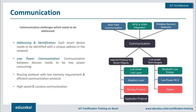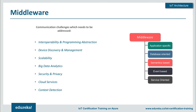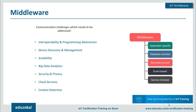Zigbee has three device types: FFD — full functional device, RFD — reduced functional device, and a Zigbee coordinator. With this, we have a basic understanding of how communication is essential for IoT architecture and the various ways to implement communication between devices. The next layer is the middleware segment.